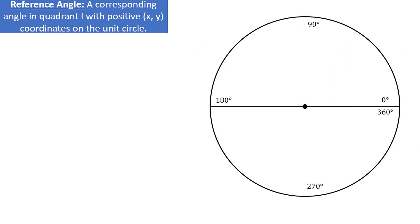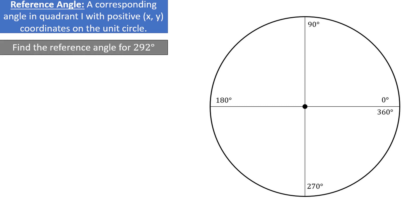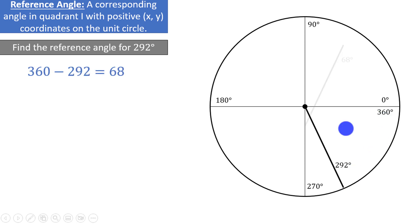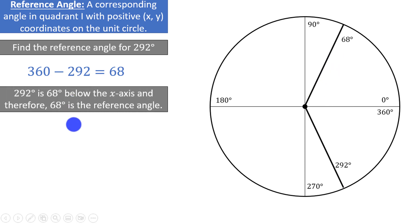Let's practice finding reference angles. Let's say that we are asked to find the reference angle for 292 degrees. 292 degrees is somewhere between 270 degrees and 360 degrees, so the angle would look something like this. To find the reference angle in this case, we will find the angle as measured from the positive x-axis down to our point on the circle. We can do this by taking 360 and subtracting 292. That tells us that the reference angle is 68 degrees. 292 degrees is 68 degrees below the x-axis, and therefore 68 degrees is the reference angle.